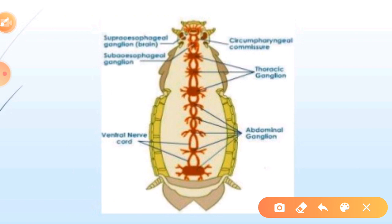There are different ganglia found: the abdominal ganglion, the thoracic ganglion, and the supraoesophageal ganglion. These are the different ganglia through which the nervous system is developed in the cockroach. There are three ganglia in the thorax and six in the abdomen.